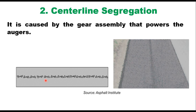The second is centerline segregation, and it is caused by the gear assembly that powers the augers. When placed too low, the augers and gear assembly may not provide enough clearance for the mix to counter-flow to the center of the mat being placed, and the result will be an insufficient, segregated mix in the center of the mat. When this occurs, the solution is to raise the auger gear assembly to give more clearance for the mix to flow to the center.